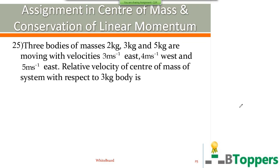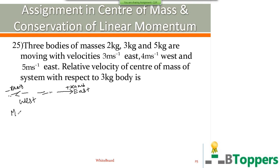See question number 25. Three masses 2 kg, 3 kg, and 5 kg are moving with velocities 3 m/s east, 4 m/s west, and 5 m/s east respectively. Find the velocity of the center of mass with respect to the 3 kg body. I choose the direction towards east as the positive direction of the x-axis. Then the direction towards west will be the negative direction. The velocity of the first body is 3 m/s east, so in vector form: v1 = 3î m/s.